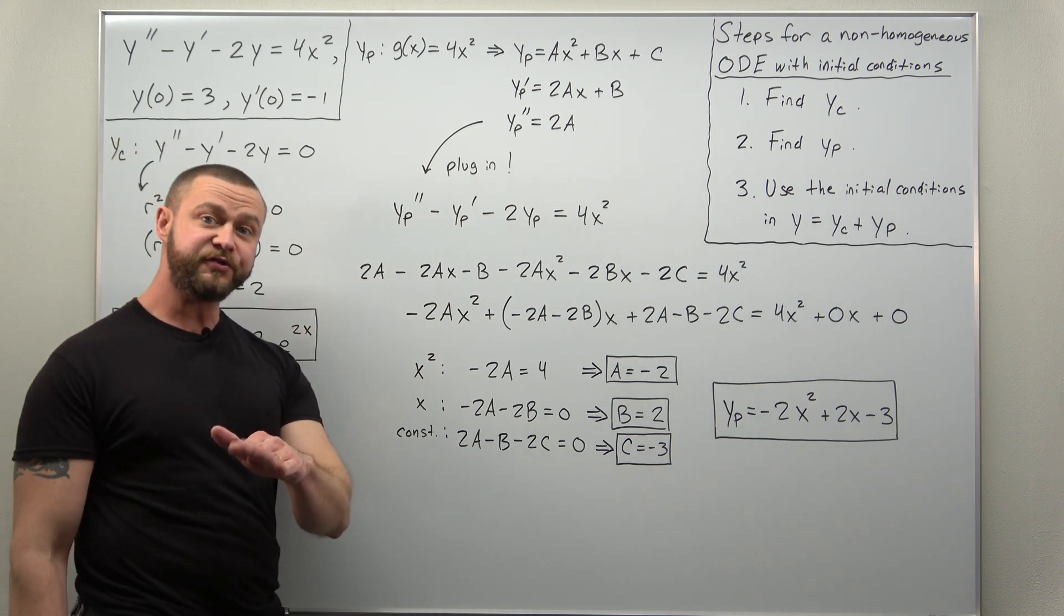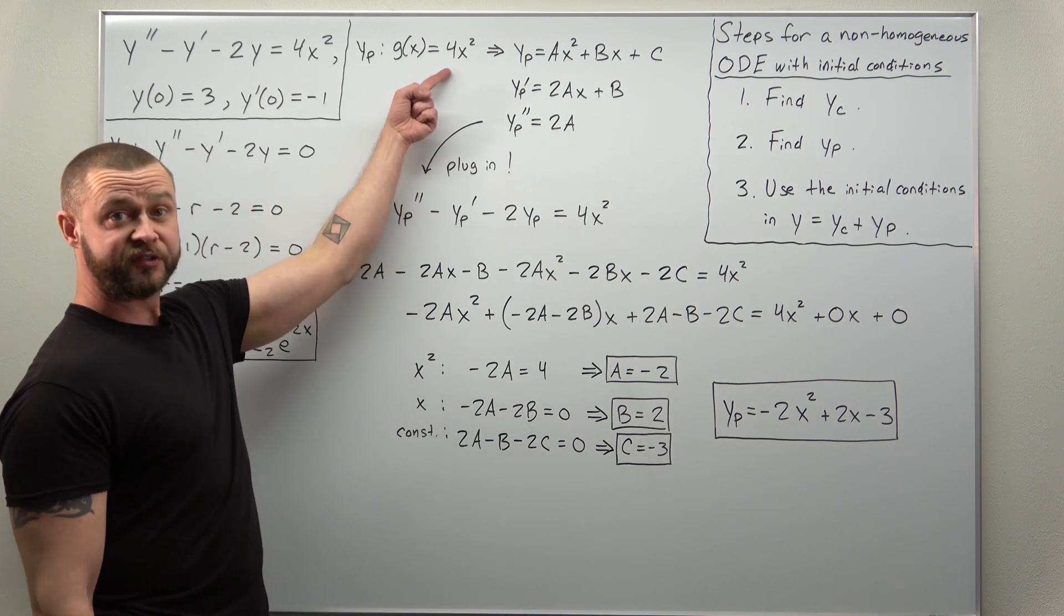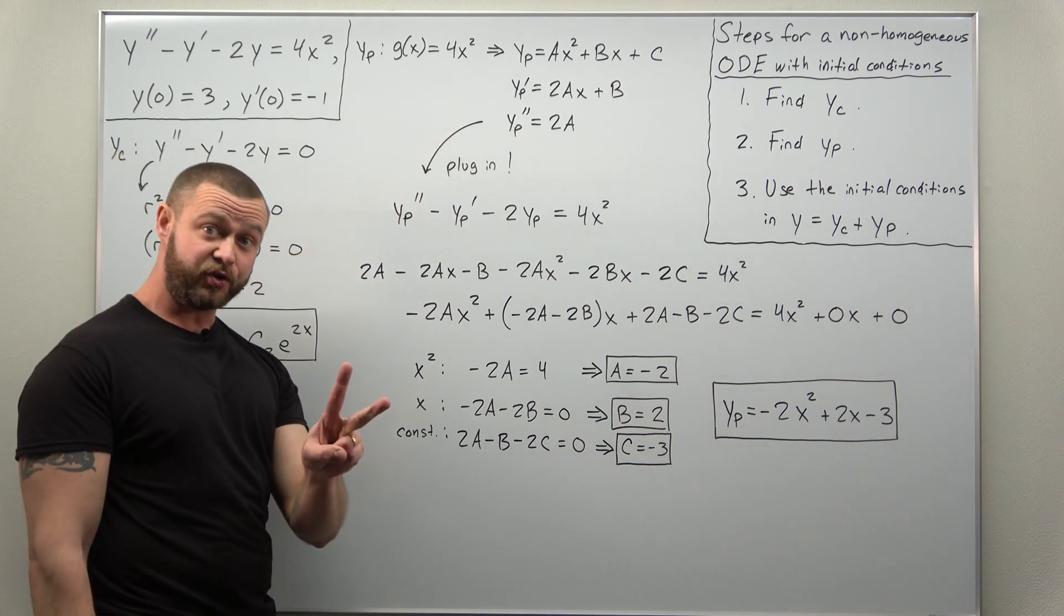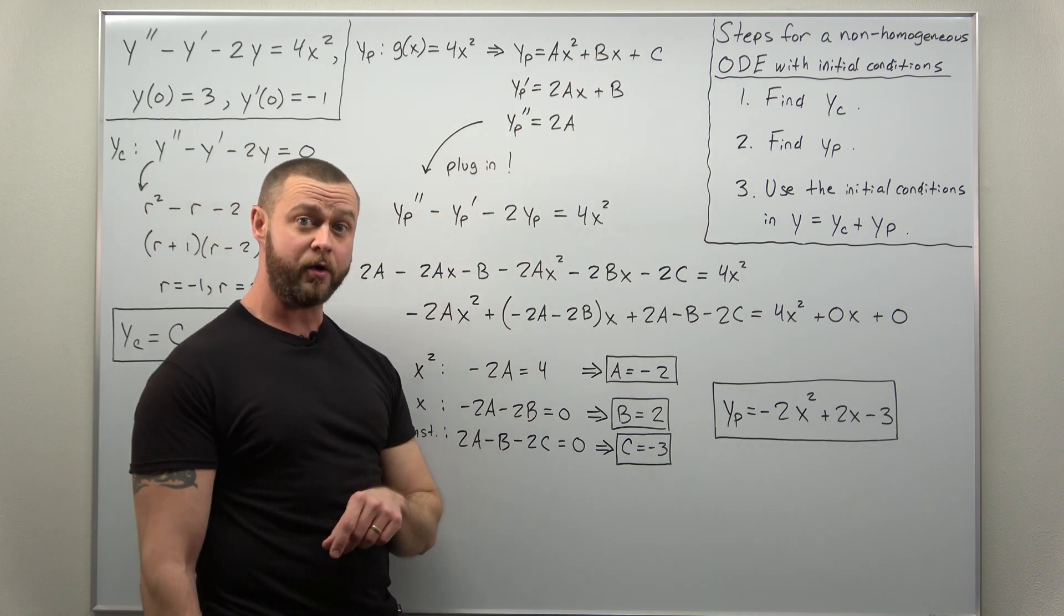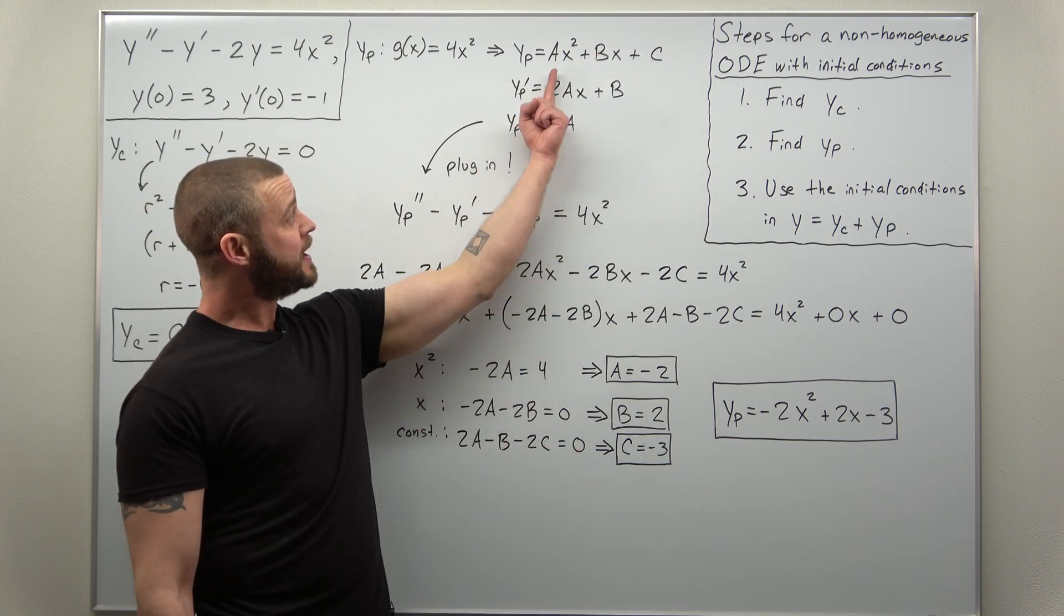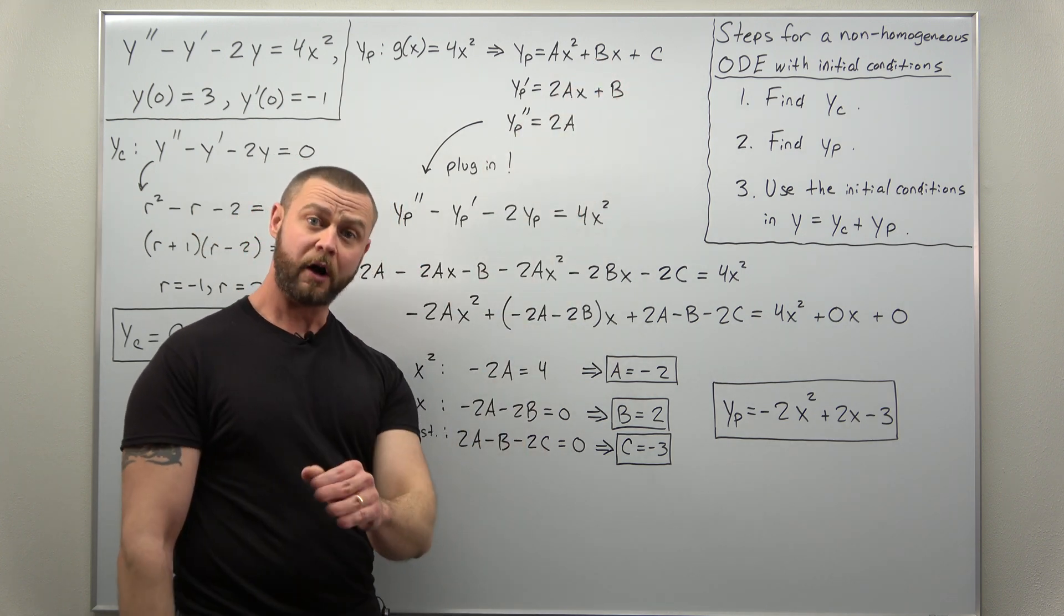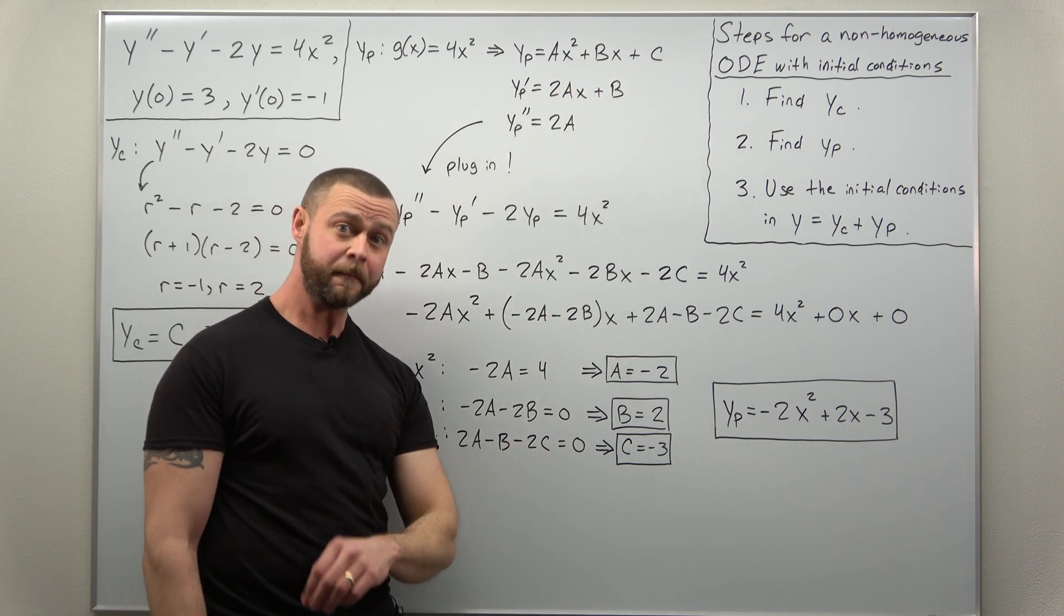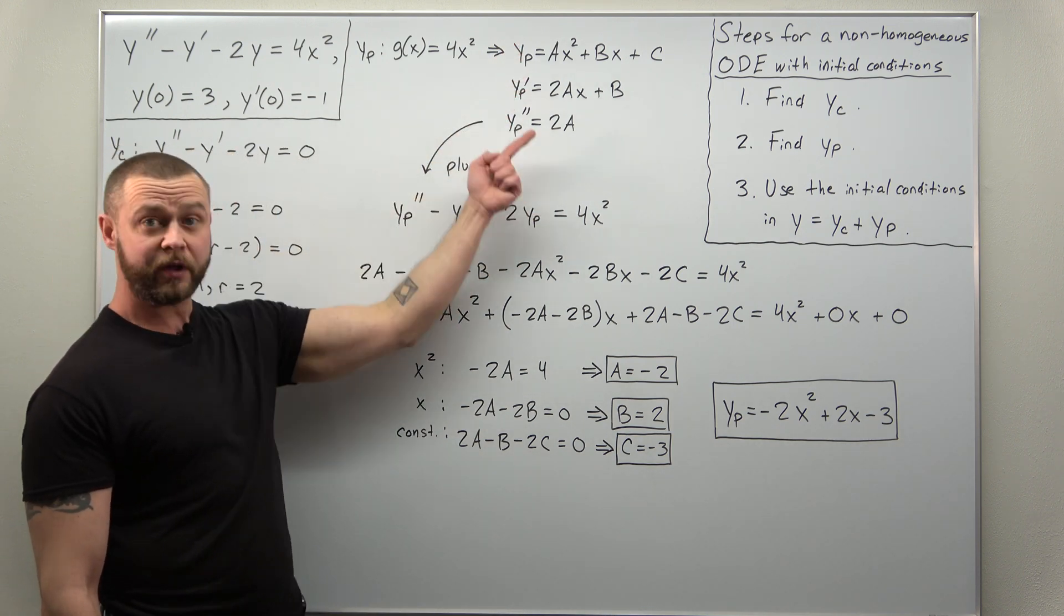This one's very straightforward to find the particular solution. Your non-zero right-hand side is a degree two polynomial. And we try a general degree two polynomial of the form AX squared plus BX plus C. All right, we did an example like this earlier in a previous video. It should be very straightforward. Calculate your derivatives.